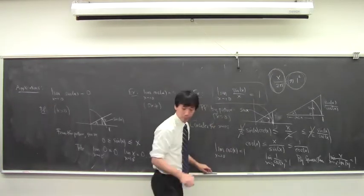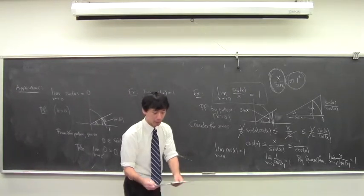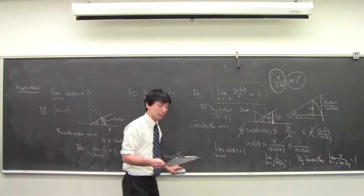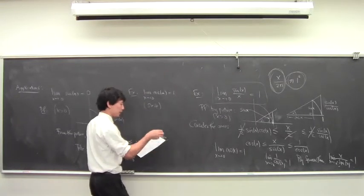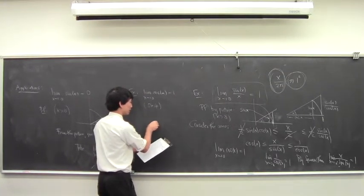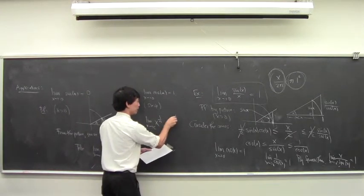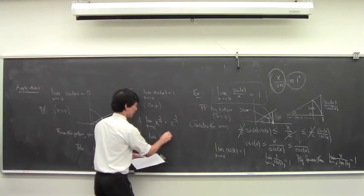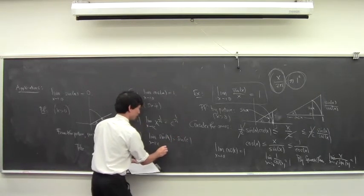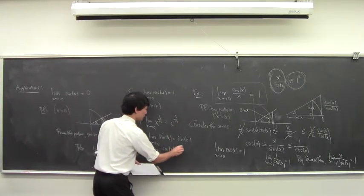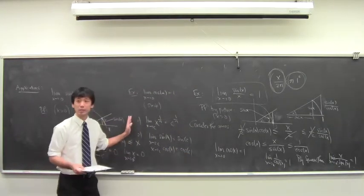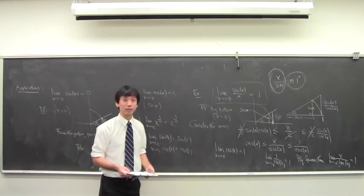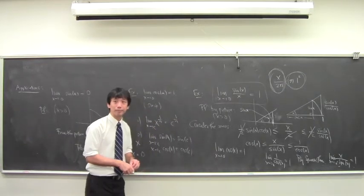This is a pretty cool result. There are also a couple of other useful facts: the limit of x to the 1/n as x approaches c is c to the 1/n; the limit of sine(x) as x approaches c is sine(c); the limit of cosine(x) as x approaches c is cosine(c). These are the most important things in this section. That's it for today.